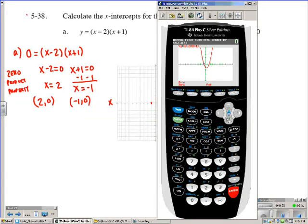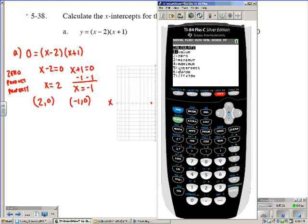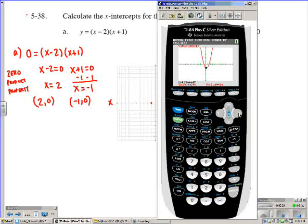You can do the same thing with the other one there. You can do second, trace. Once again, number 2. Let's create a left boundary here. Let's just do about right here because we're looking at this x-intercept. And then we can take it, and we can move it over on the right side of that x-intercept. Hit enter. And it should fall between those two boundary lines. Hit enter one more time, and you get 2, 0. That's what we have.